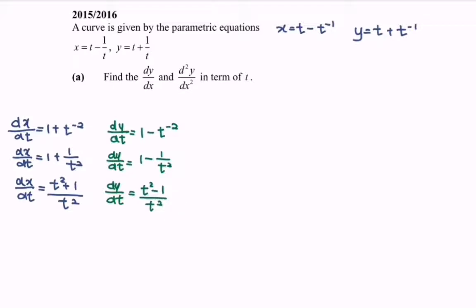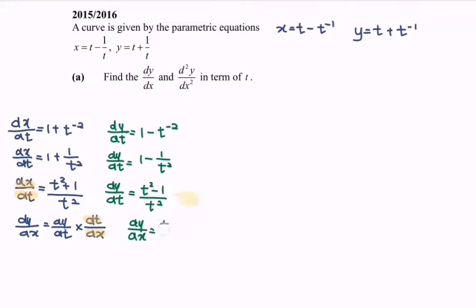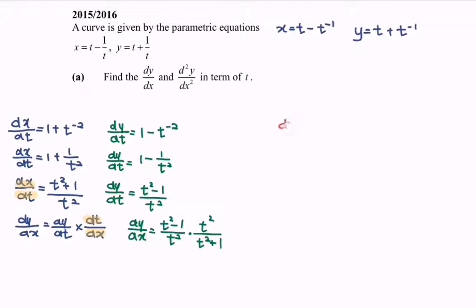Next, we are going to find dy/dx. Given the formula, dy/dx is equal to dy/dt multiplied with dt/dx. Do remember to flip the situation, and we will have dy/dx equal to t squared minus 1 over t squared, multiplied with t squared over t squared plus 1. Simplifying, we obtain dy/dx equals t squared minus 1 over t squared plus 1.